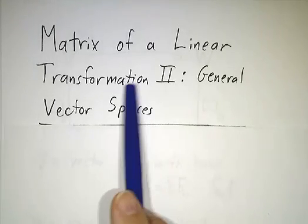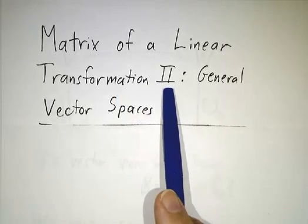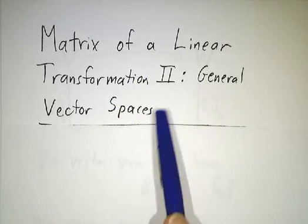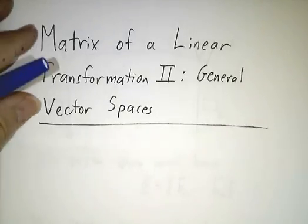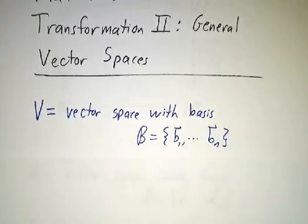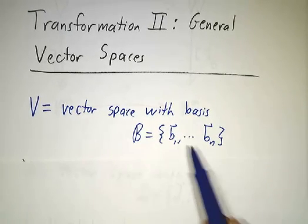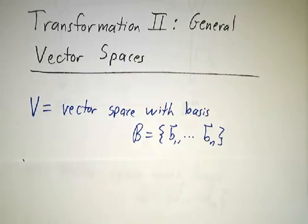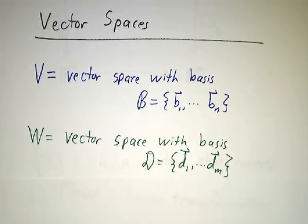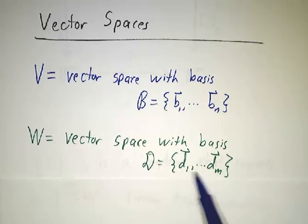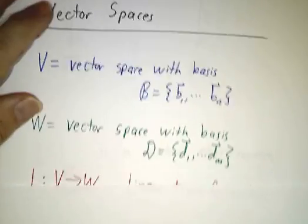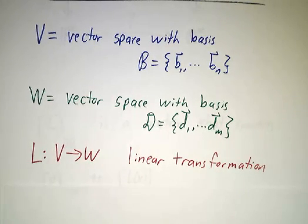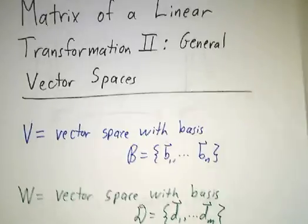In a previous video, we talked about the matrix of a linear transformation when the input space and the output space were both Rn, or Euclidean spaces — a map from Rn to Rm. Now we're going to do it for a general vector space. The idea is our inputs are going to be in some vector space V, an n-dimensional vector space with a basis B: B1, B2, ..., Bn. The output space is an m-dimensional vector space with a basis D1 through Dm. We have some linear transformation that takes a vector in V and spits out a vector in W, and we want to understand that in terms of matrices.